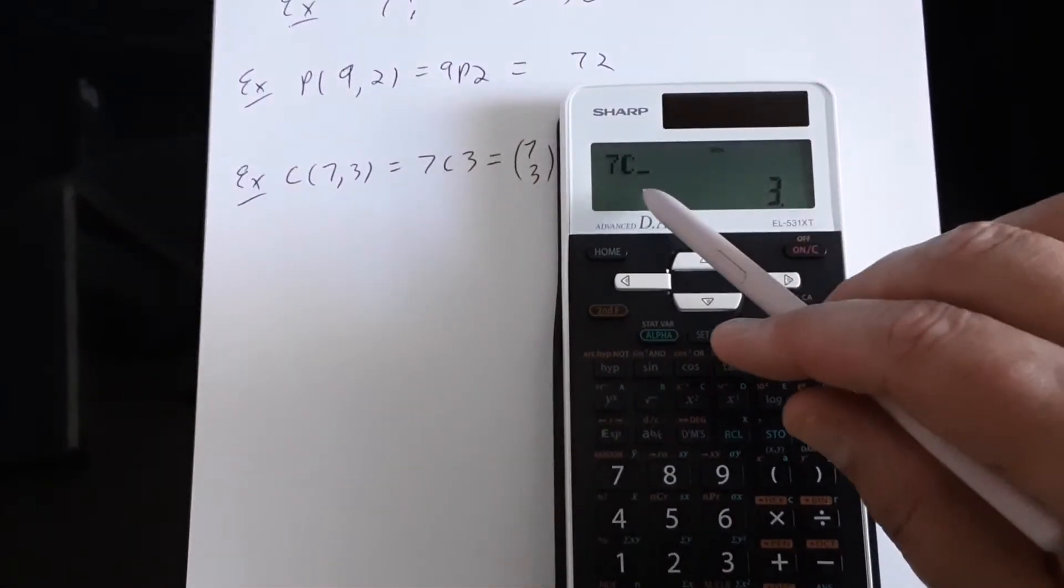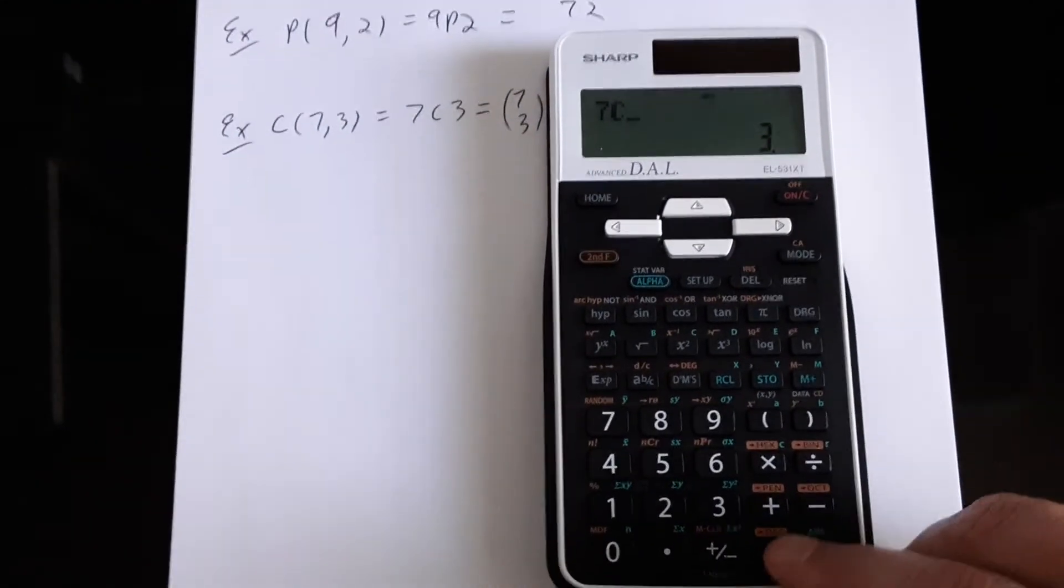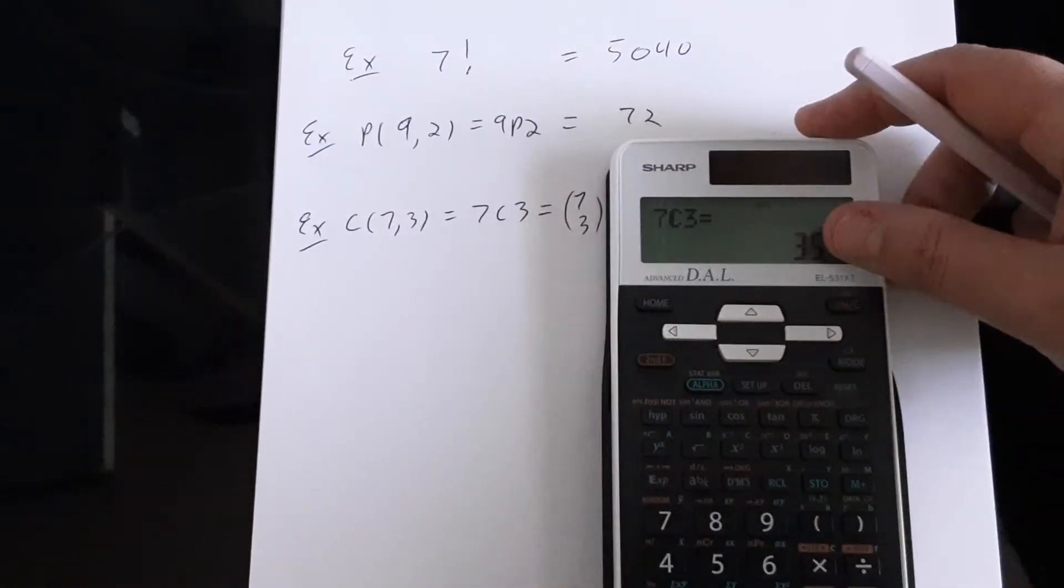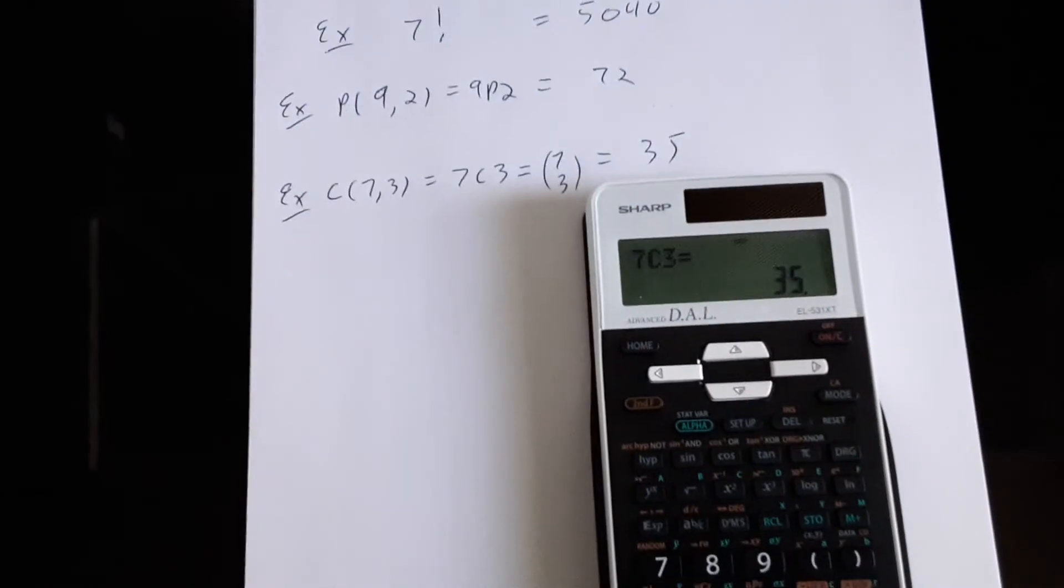And you can see the C in the display window. That's seven C3. We hit equals and the answer is 35. So if you had seven books and you wanted to select three of them, that could be done in 35 ways.